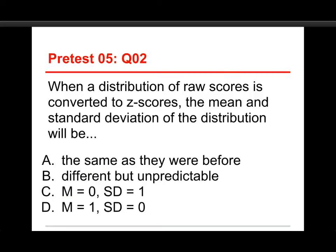Number two, when a distribution of raw scores is converted to z-scores, the mean and standard deviation of the distribution will be: A. the same as they were before, B. different but unpredictable, C. a mean of 0 and a standard deviation of 1, or D. a mean of 1 and a standard deviation of 0. The answer is C, a mean of 0 and a standard deviation of 1.